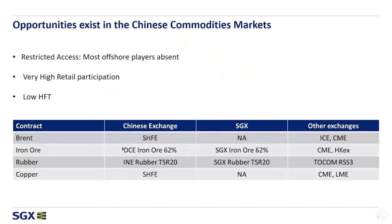We'll move into the first slide, basically outlining the different exchanges that are offering access to commodities markets. That would be arbitrage onshore versus offshore China. You can see that these are the three main commodities: Brent, iron ore, rubber, and copper. Two of these commodities are listed on SGX — iron ore and rubber — and we will talk about them in more detail.